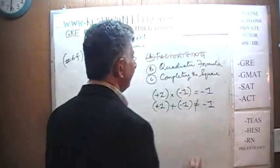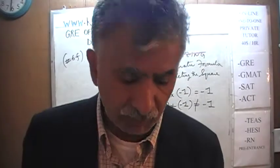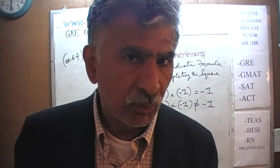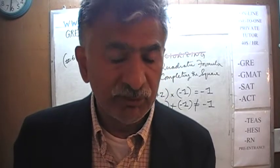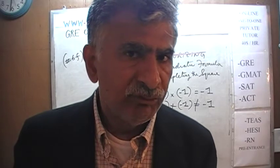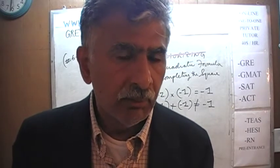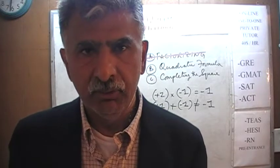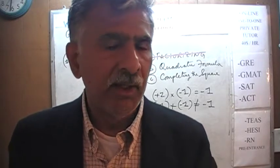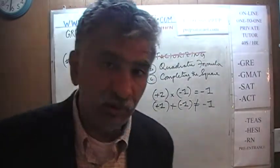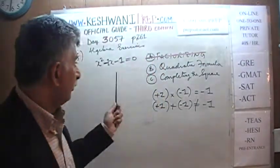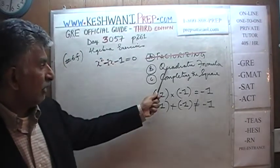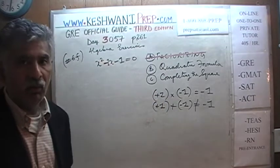What does this tell us? When factorization does not work, it tells us that whatever the solutions are to this quadratic equation, they are not going to be integers — not whole numbers. They are going to be some weird quantities, perhaps fractions or radicals. Had the solutions been whole numbers, we would have been able to find the factors. We only have two choices: use the quadratic formula or complete the square.